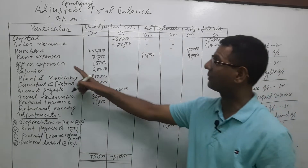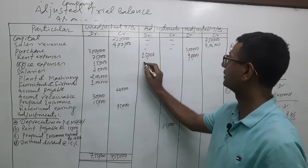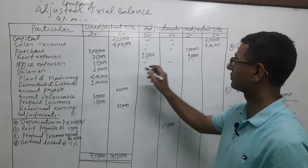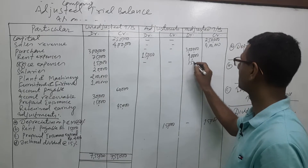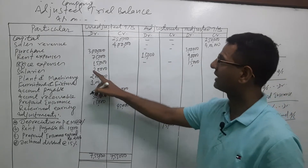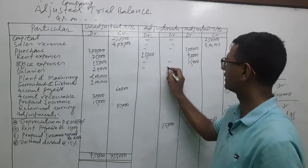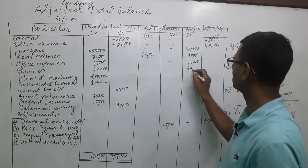For office expenses, there is no adjustment given, so we write it as it is — 15,000. For salary, similarly no adjustment, so we write it as it is.